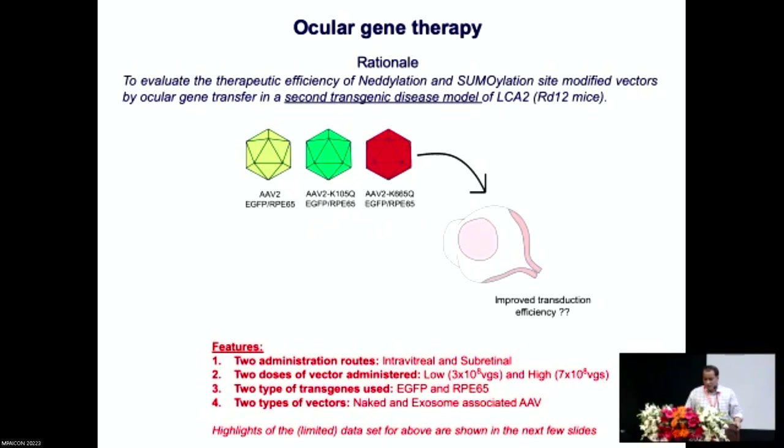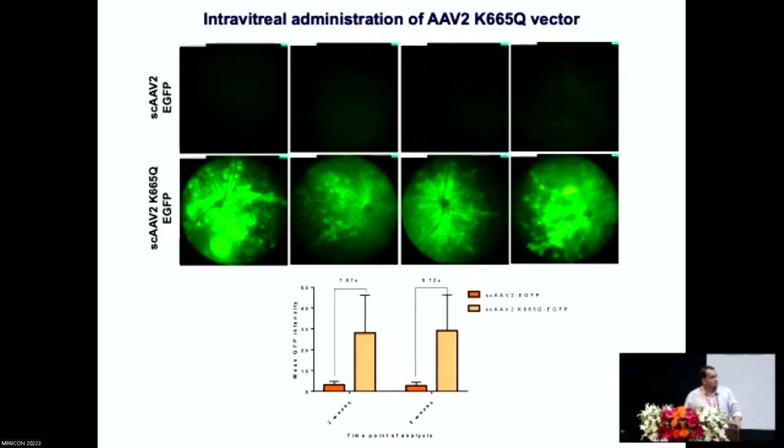First of all, we wanted to know whether it works. We did intravitreal gene transfer and also subretinal gene transfer into murine eyes using reporter viruses. This is the fundus imaging of a mouse eye — you can see clear expression of the reporter gene, in this case GFP, in mice that received the AAV2 mutant vectors — and this is the level of expression seen with the unmodified vector. Five years of work went into this.